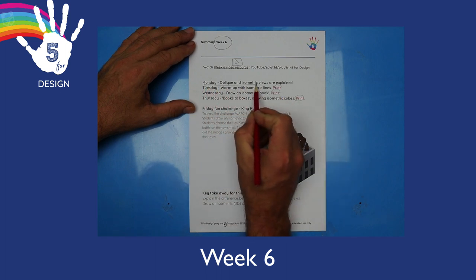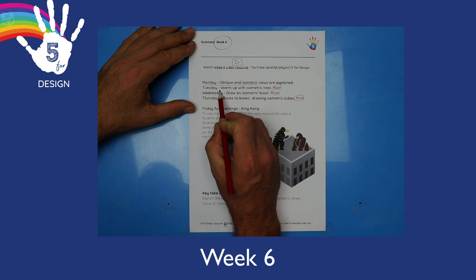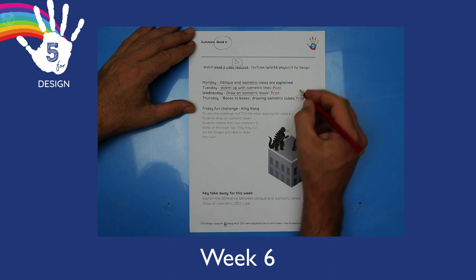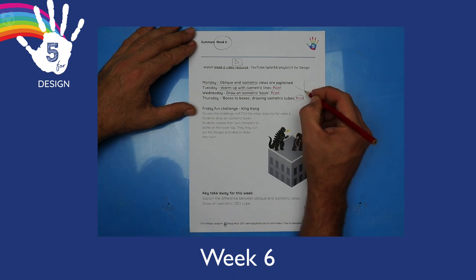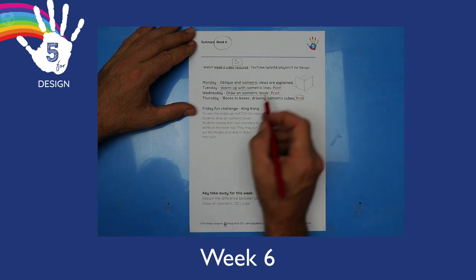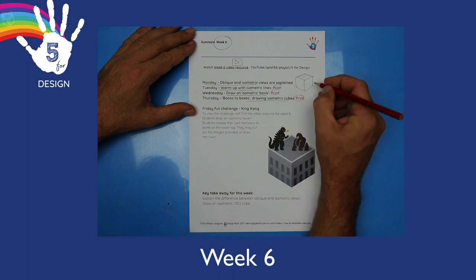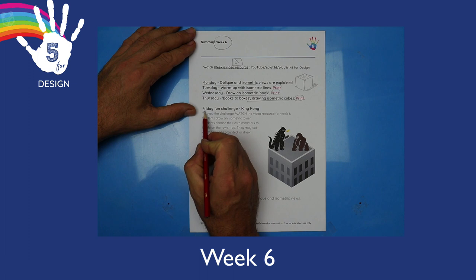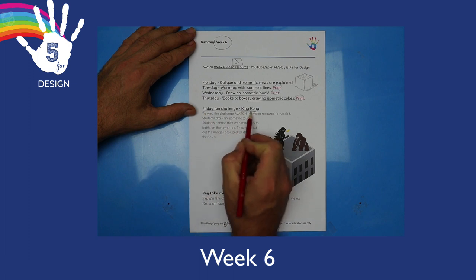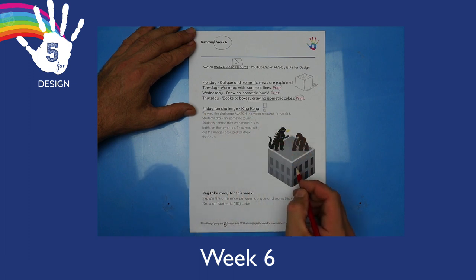Monday, learning about oblique and isometric. Tuesday, we're warming up with those isometric lines. Wednesday, we're learning to draw a book, and even though it looks like a book, it's really the first step in drawing a cube. Imagine some pages there. And Thursday, the last step is to complete those far edges, and we have a cube.